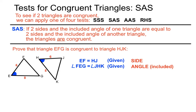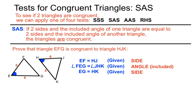We need one more side statement. We've already got a side statement and an included angle statement. Looking at another side matching on both triangles: EG is eight and HK is eight as well, so we can see that they're equal. That's given to us in the diagram. We've now pieced together enough information to pass this SAS congruent triangles test.